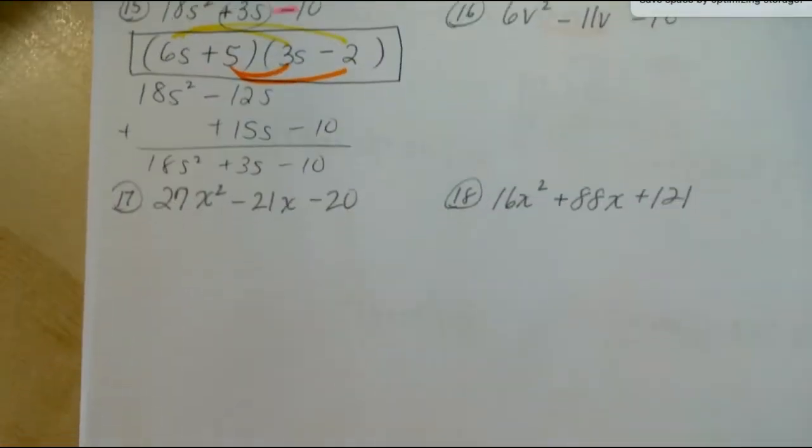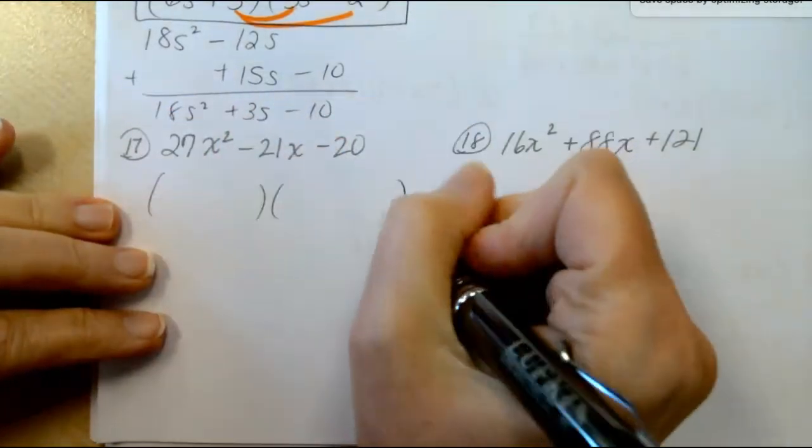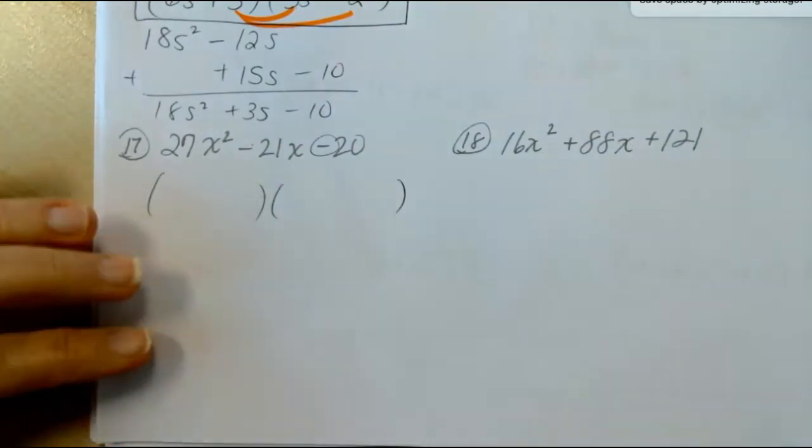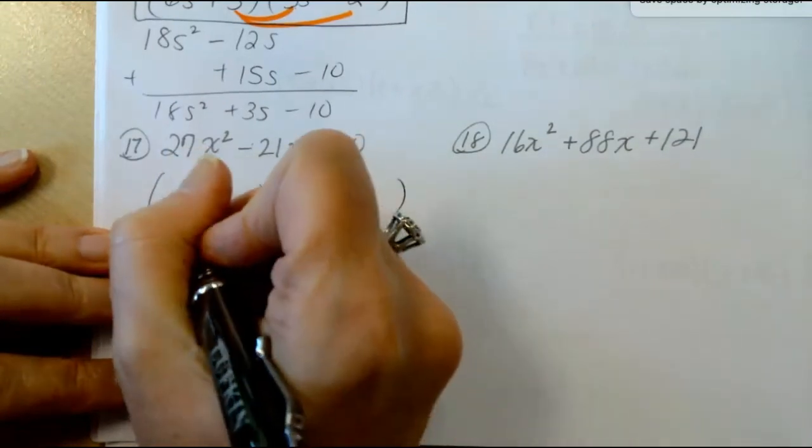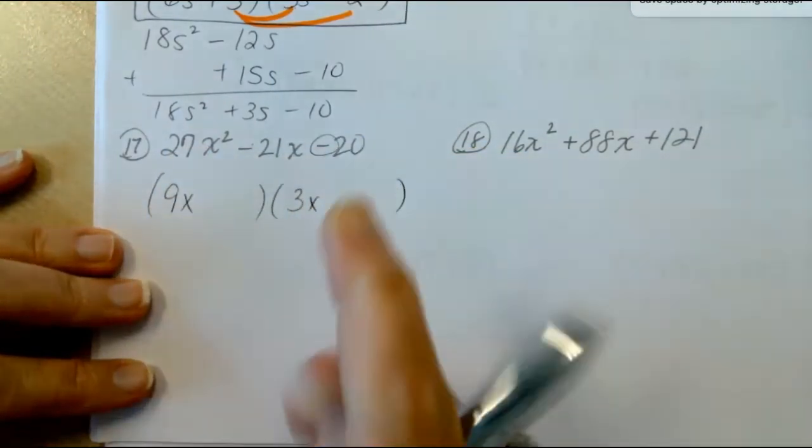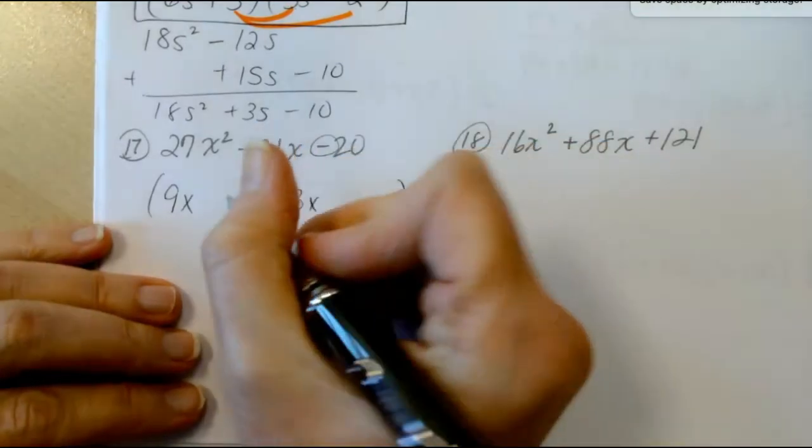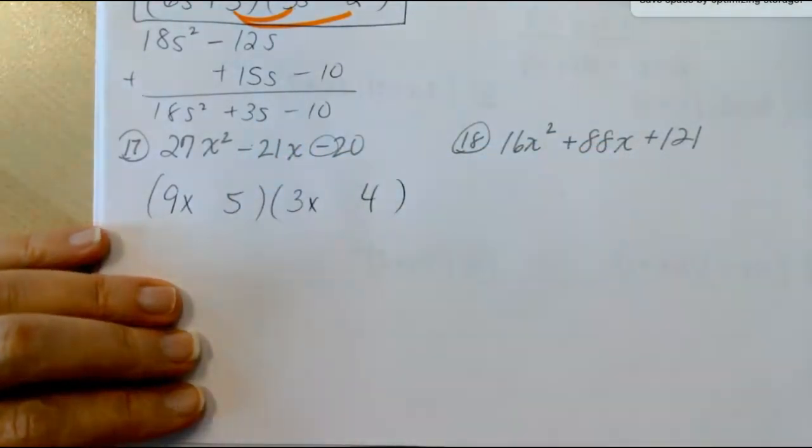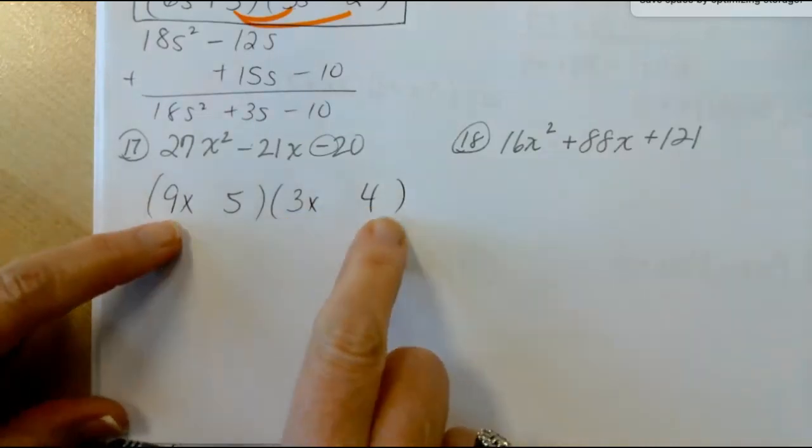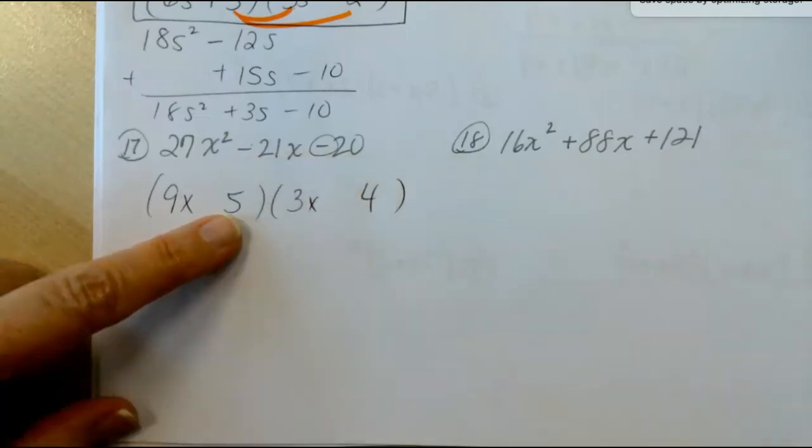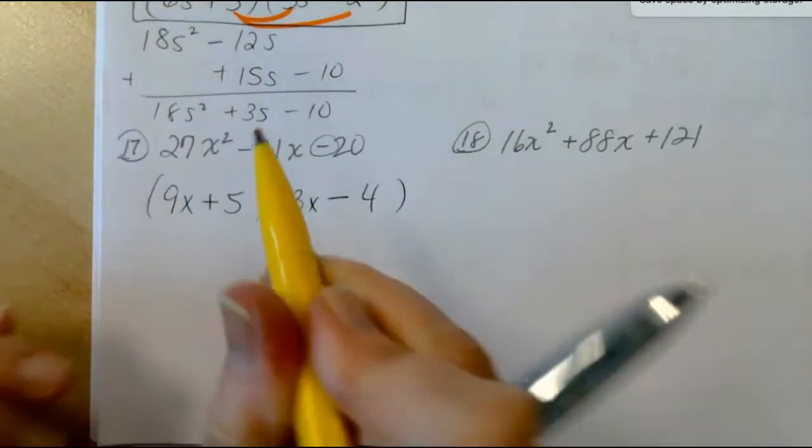One last one. Number 17. We've got minus minus, but that minus means the signs are going to alternate. Let's give it a guess here. 27 will say 9x and 3x and for 20, let's go with, let's put a 5 here and a 4 here. This is going to be 36. This is going to be 15. And 36 minus 15 is where we're going to get that negative 21 from. So we need our 36 to be negative, our 15 to be positive. Let's give it a quick check.